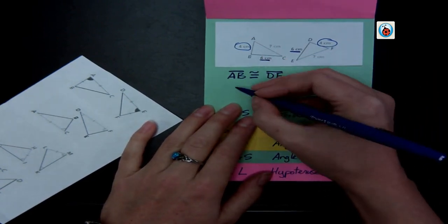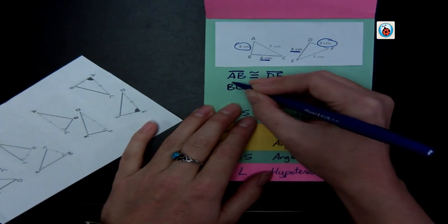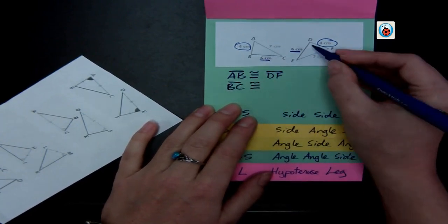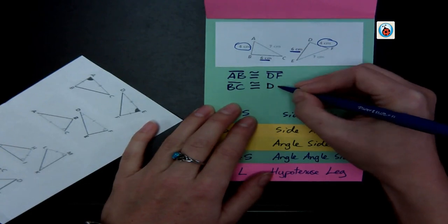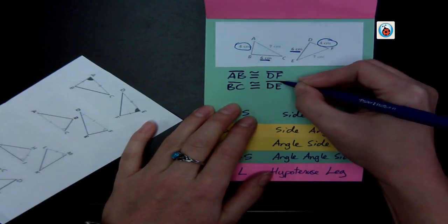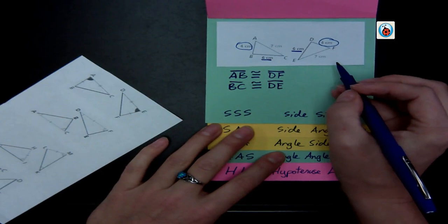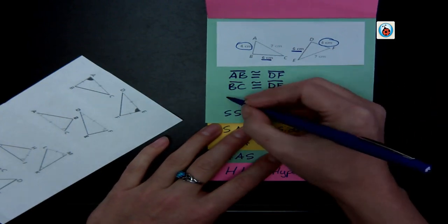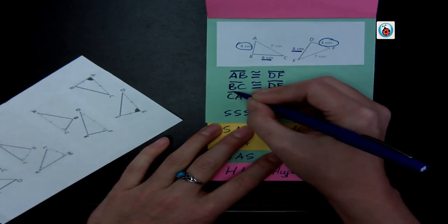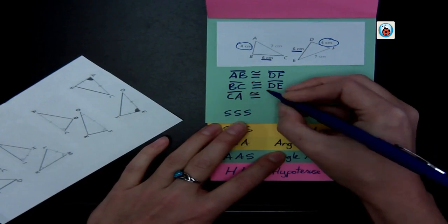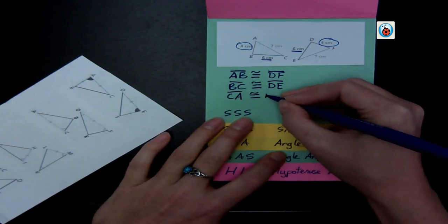Next I'll do my six centimeters. So BC is congruent to my DE. And then last of all is the seven centimeters. So CA is congruent to EF.